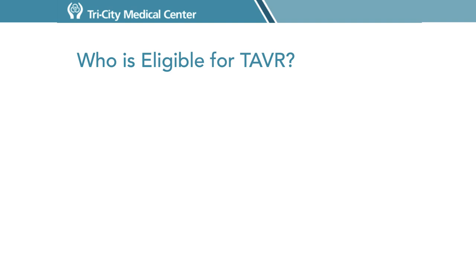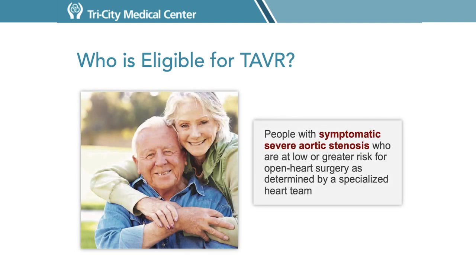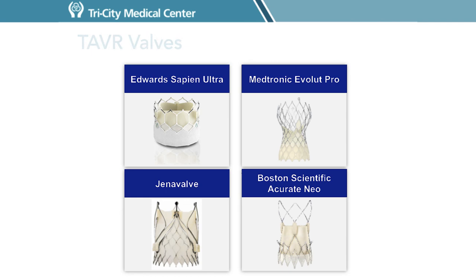Who is eligible for TAVR? Currently, TAVR is recommended for severe symptomatic aortic stenosis with low or greater risk for open heart surgery as determined by a heart team approach. TAVR can also be used to replace a previously implanted bioprosthetic heart valve in the aortic or mitral position that has failed due to stenosis or regurgitation. The indications for TAVR will continue to evolve over time based on ongoing clinical trials, data, and real-world experience. There are multiple types of TAVR valves available and a specialized heart team can help determine what the best treatment option is for you.